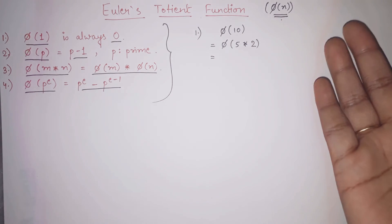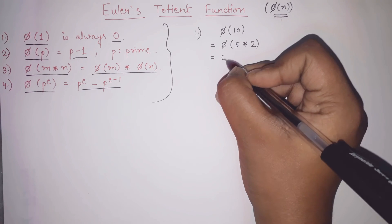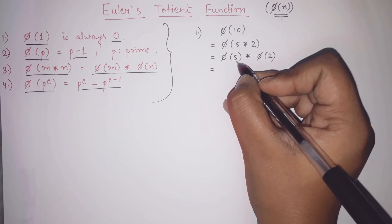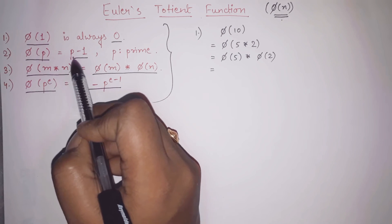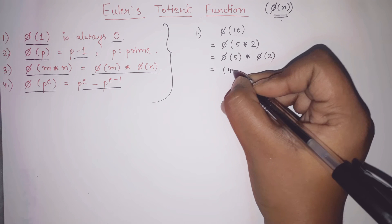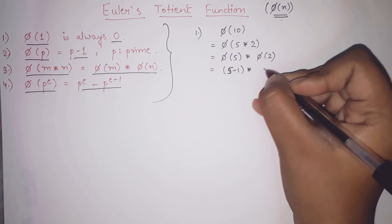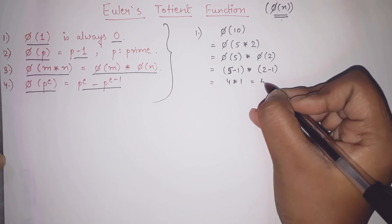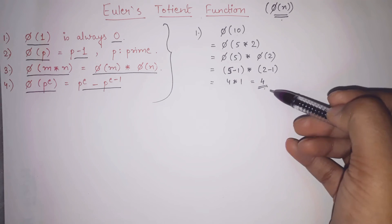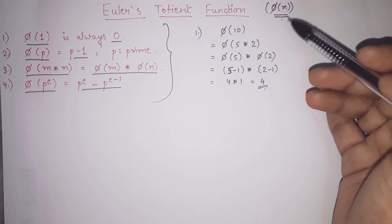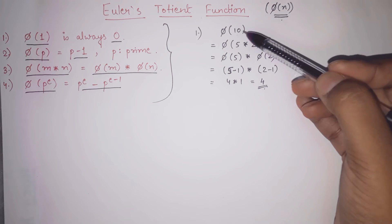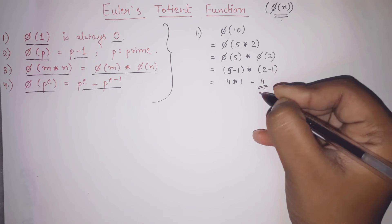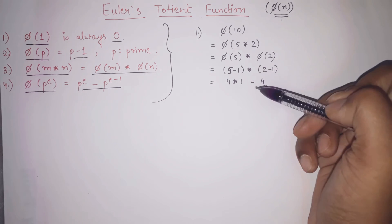Since phi of m times n equals phi of m into phi of n when m and n are relatively prime — and 5 and 2 are both prime numbers, so they are relatively prime — we can write phi of 10 as phi of 5 into phi of 2. Now 5 is prime, so phi of 5 equals 5 minus 1 equals 4. And 2 is prime, so phi of 2 equals 2 minus 1 equals 1. So phi of 10 equals 4 times 1 equals 4. This means there are 4 integers up to 10 such that those integers and 10 are relatively prime — their HCF with 10 is 1.